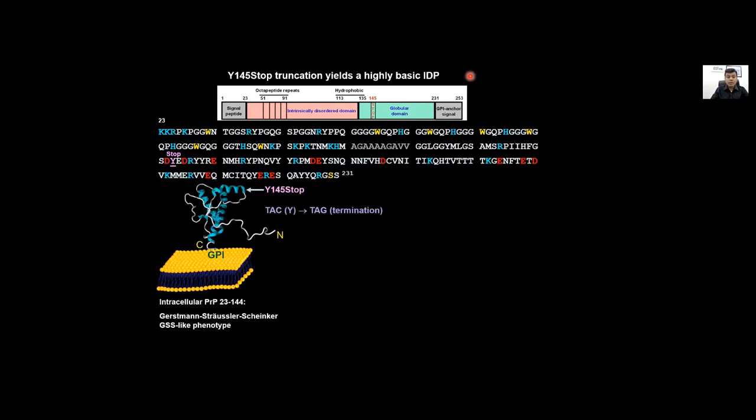That basically results in the formation of an intrinsically disordered protein because the C-terminal part is now not translated because of the stop codon mutation. Typically a prion protein is a GPI anchored protein. The GPI anchor is at the C-terminal end. If there is a mutation Y145 stop, first you don't translate the globular domain so it's an IDR protein, and secondly the GPI anchor is also not translated. Therefore this becomes an intracellular protein which accumulates in cytoplasm.